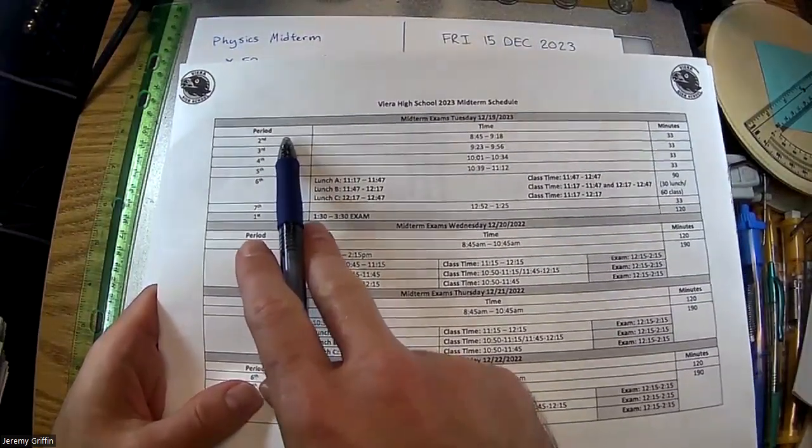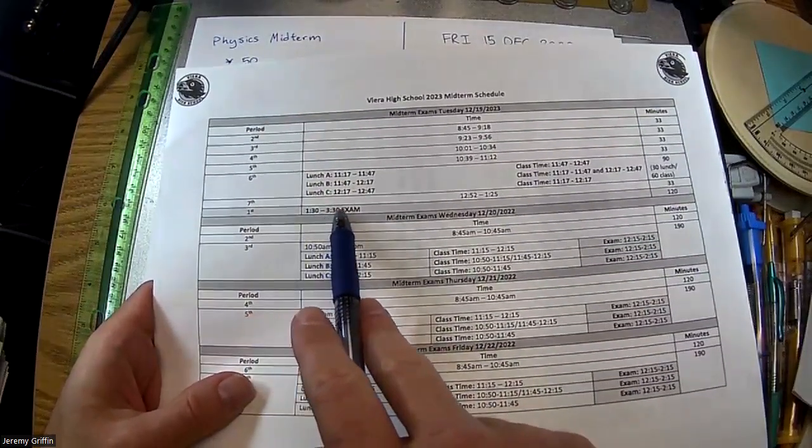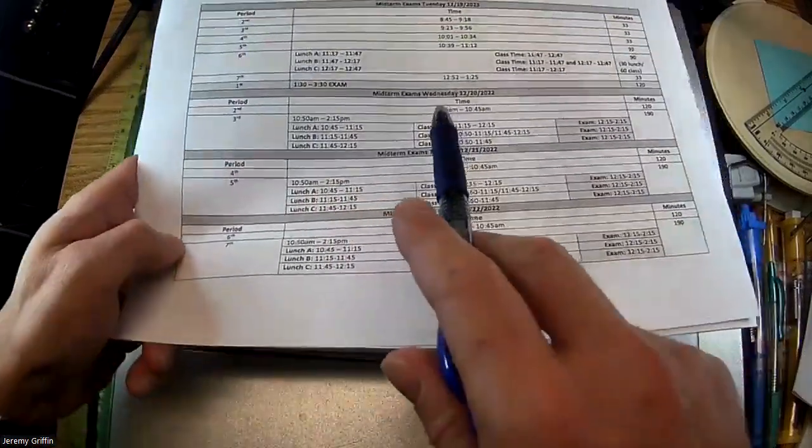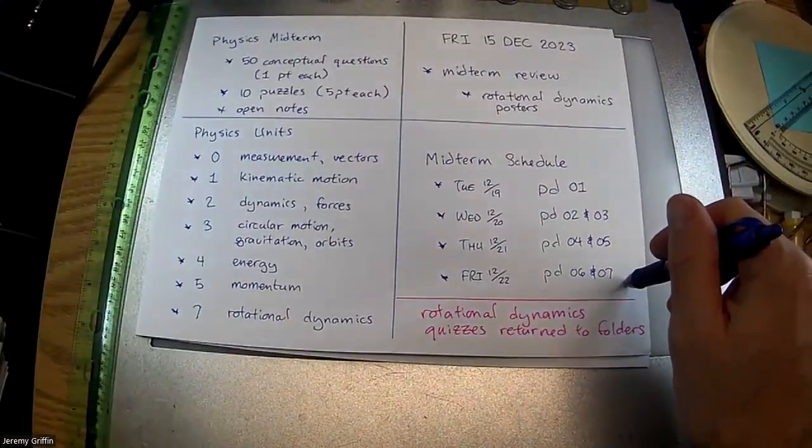Second period. Then you go through the day, we've got a modified schedule. Then your first period is your very first exam. It's the last two hours on Tuesday. And then Wednesday, Thursday, Friday, you have a couple of classes and exams each there.